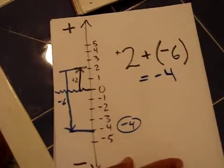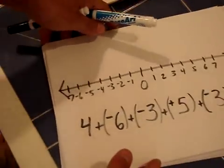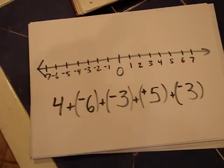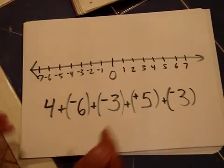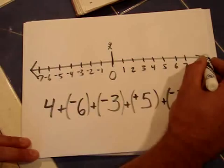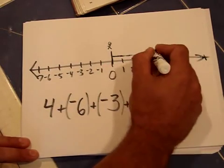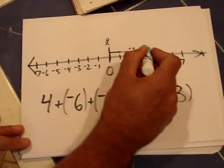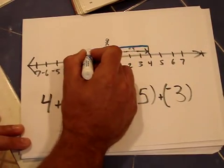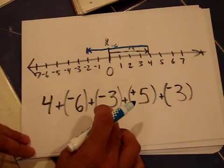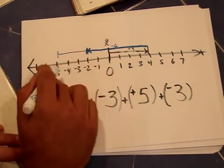Now for a more complex example, adding 4 + (−6) + (−3) + 5 + (−3). Starting at 0, I move 4 positive — that's 1, 2, 3, 4 to the right. Then 6 negatives — down 4 brings me to 0, then 5 and 6, so I'm at negative 2. Then add negative 3, moving 1, 2, 3 more down. Now I'm at negative 5.